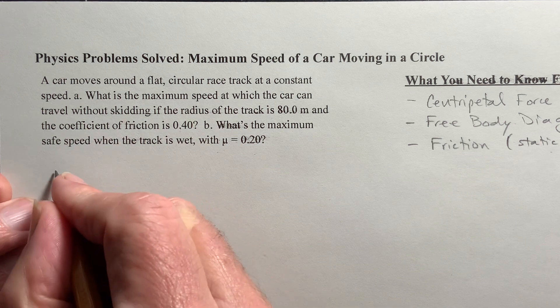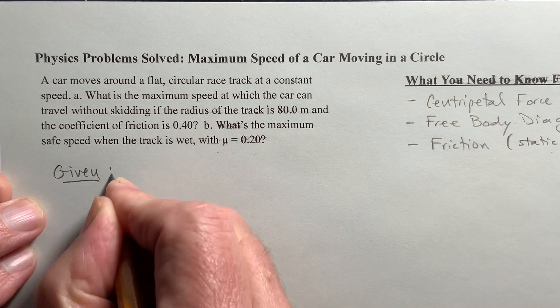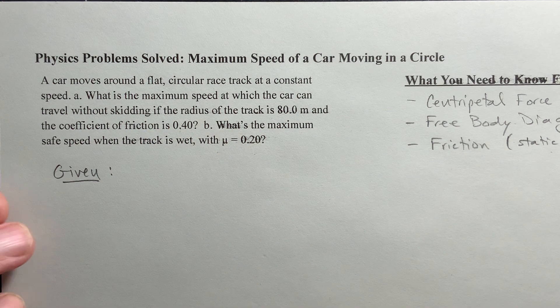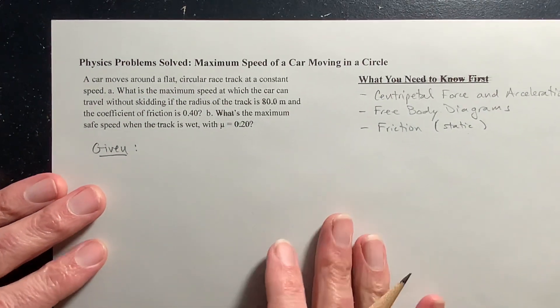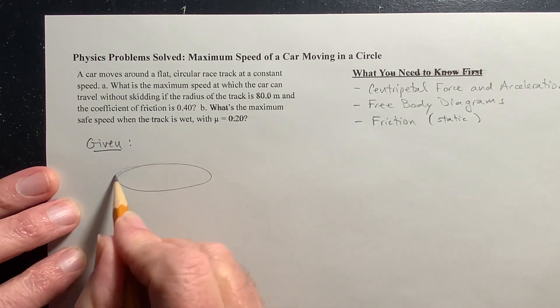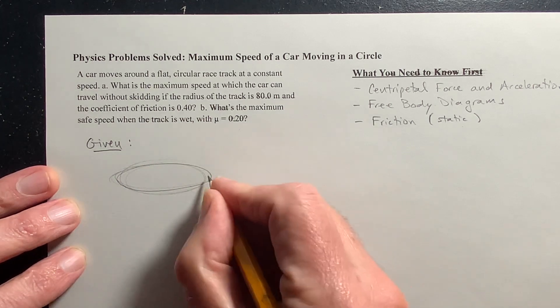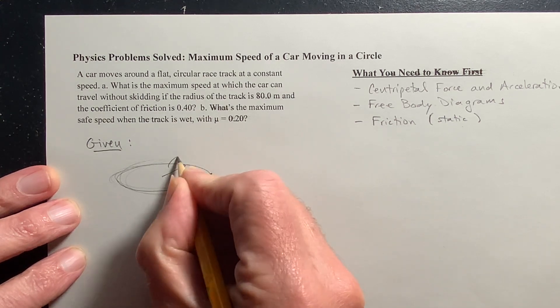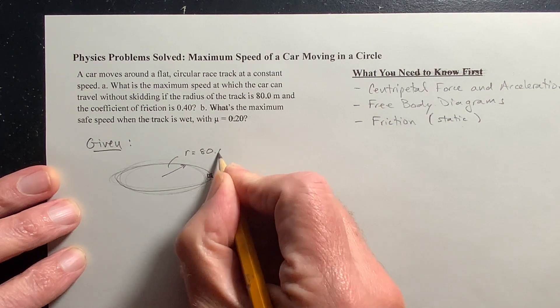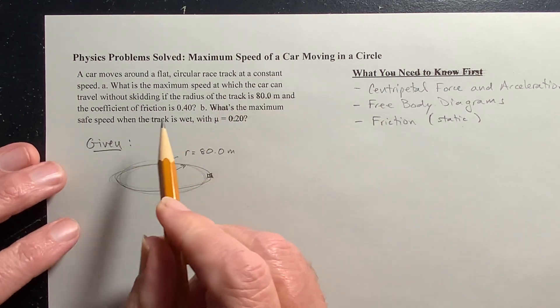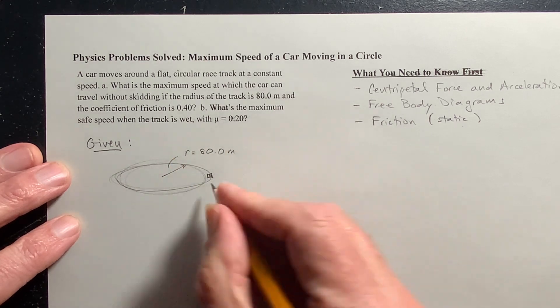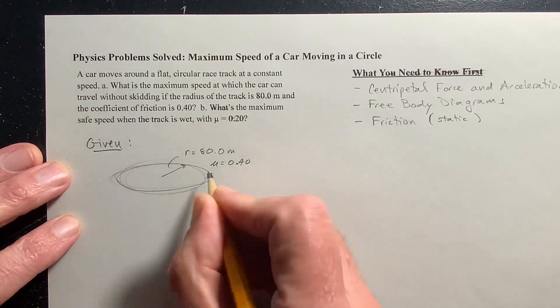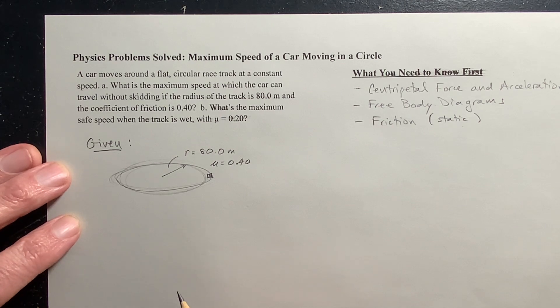Let's get started. Here's what's given. We've got a car going around a circular track. I'm going to draw this with a little bit of perspective here. Here's the circle. It's moving in a circle. And then here's the car. Now the radius of this circle, r, is 80 meters. And the coefficient of friction, mu, is 0.40. Not a very grippy road. That's fairly slippery for a road.